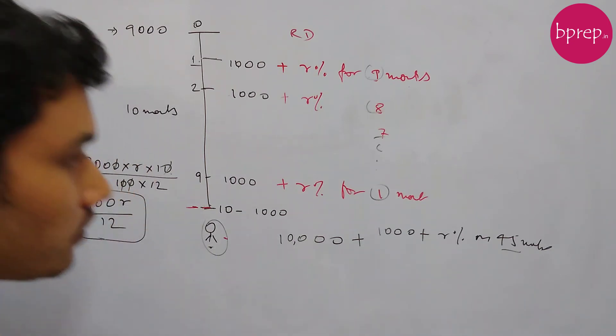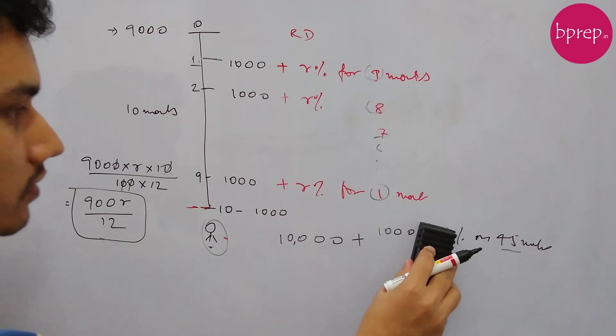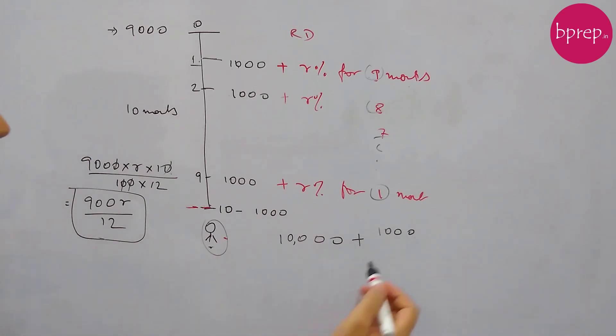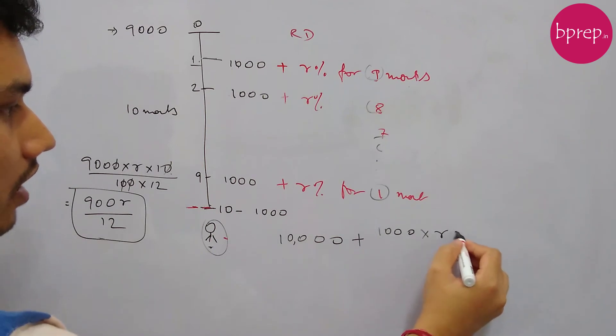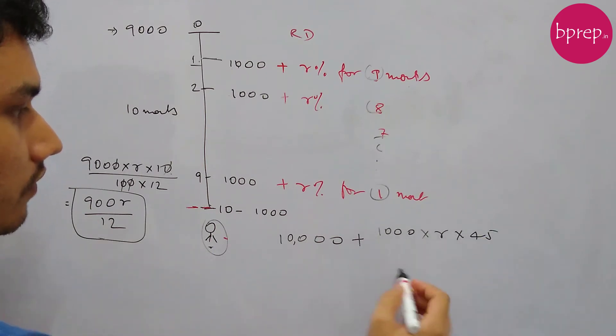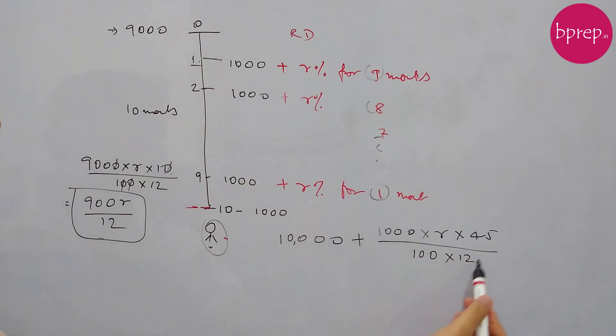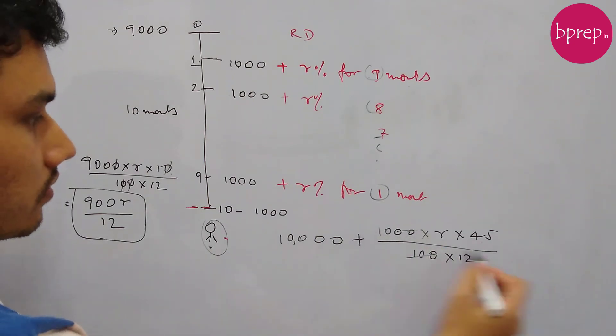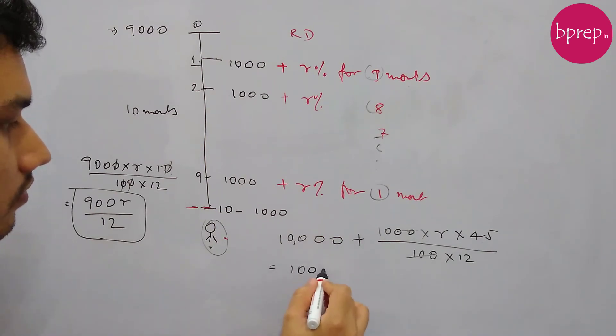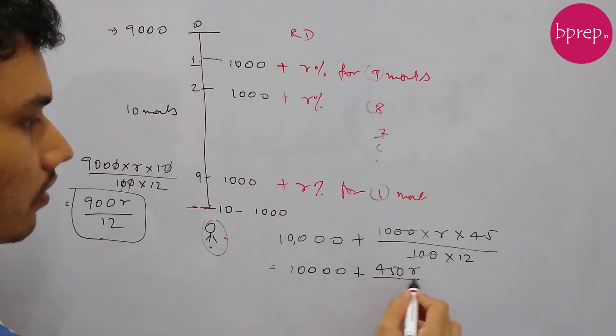So this 1000 - R% on 1000 for 45 months, so let's write it this way. The simple interest on this is: principle is 1000, rate of interest is R, and T is 45 by 100, and again we are dividing it by 12 because this 45 is in months. So this is 10,000 plus 450 R by 12, which is 10,000 plus 450 R by 12.